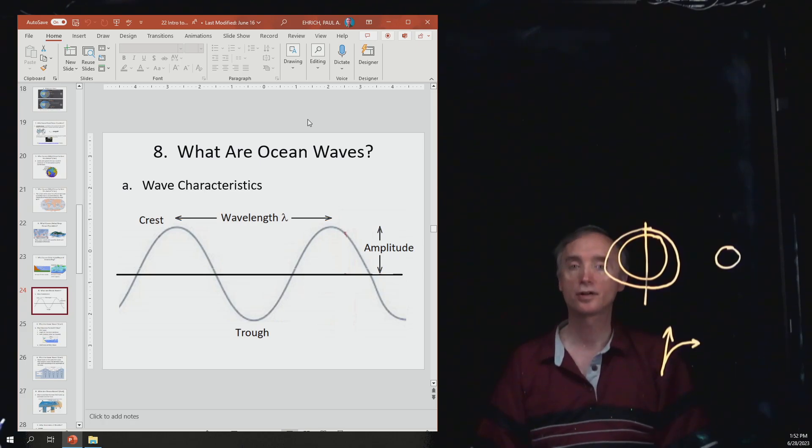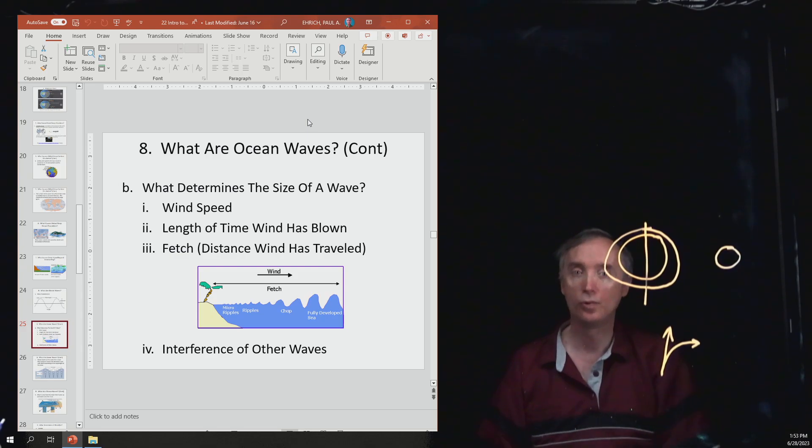Okay, then we talked about what ocean waves were. So you need to know what the wavelength of a wave is. You should know what a crest is, what a trough is, and what the amplitude of a wave is. And then what determines the size of an ocean wave?